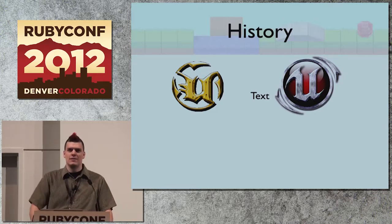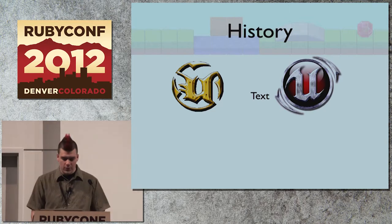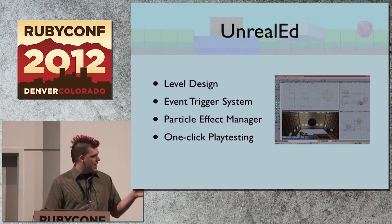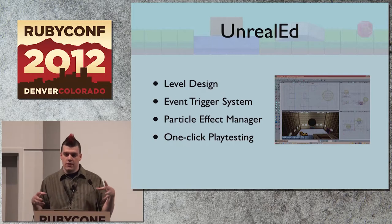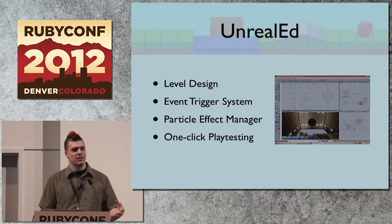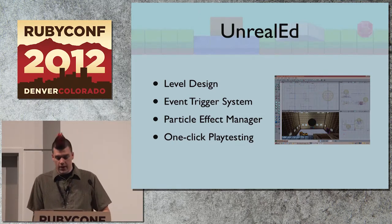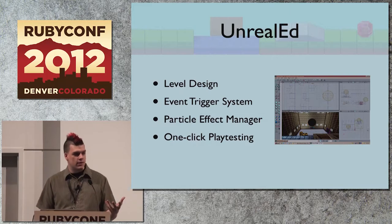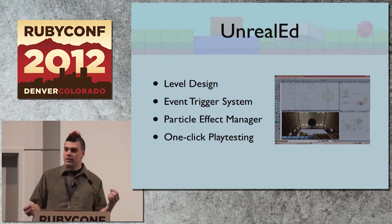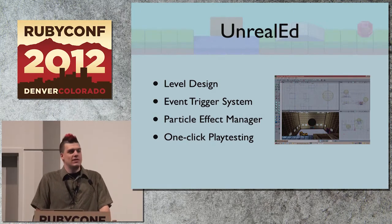That is when I realized that the editor itself, while having stability issues, wasn't necessarily my problem. The problem is that the Unreal Engine is split up into two components. The first component is UnrealEd, which is focused on level design, the event trigger system, particle effect management — effectively all of the non-technical technical aspects of game development, where you don't need to do a whole lot of programming and can work through a GUI editor. From a mod perspective it was very useful because you could, within one click, load an instance of whatever you were working on.